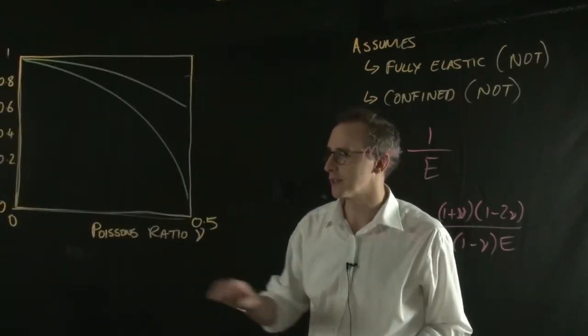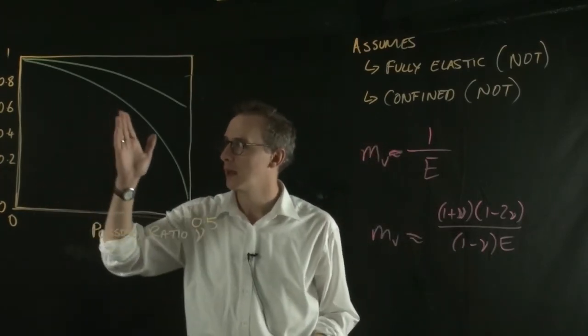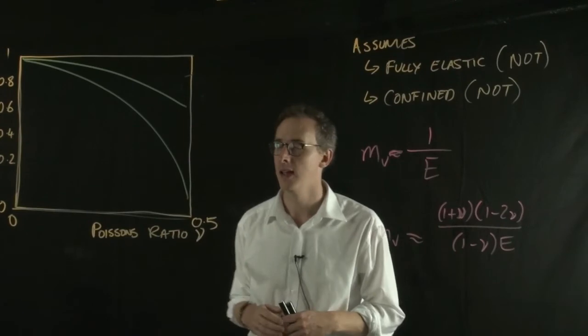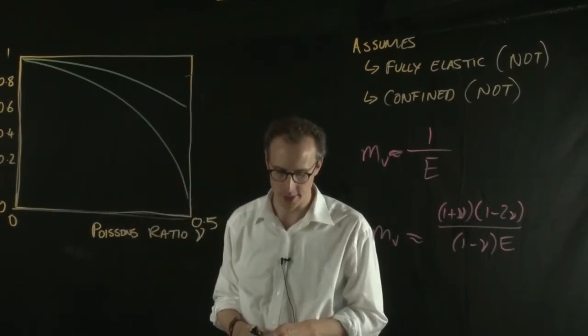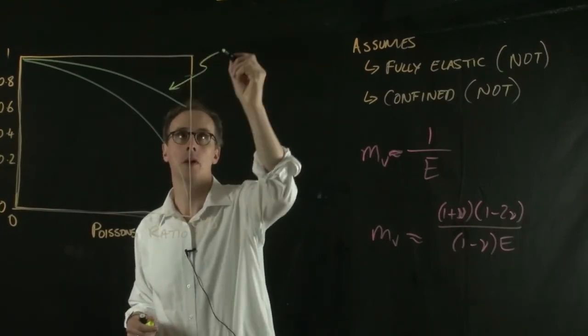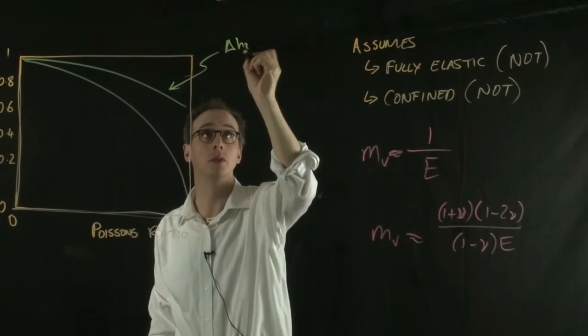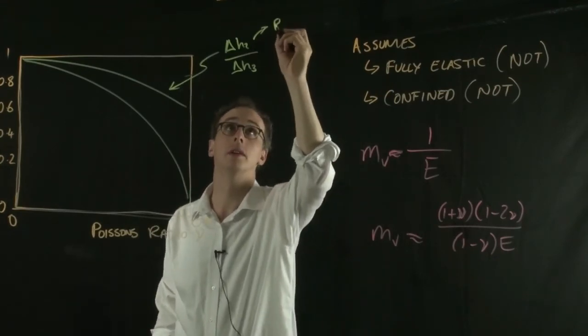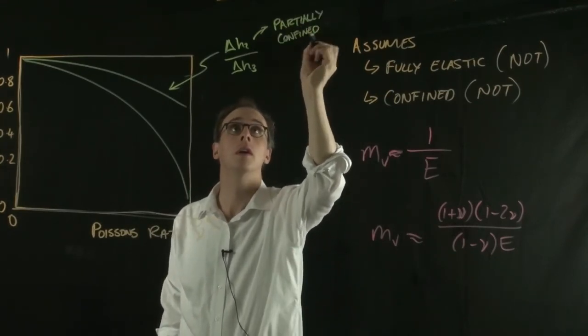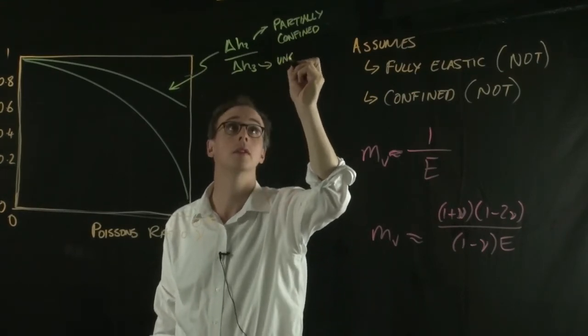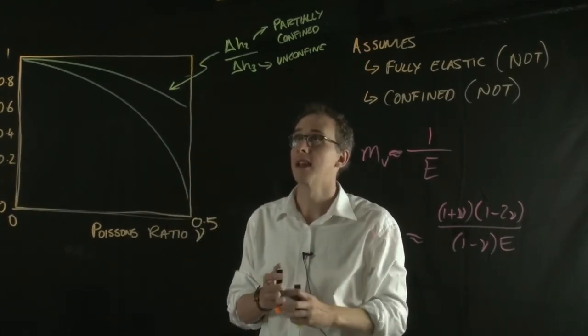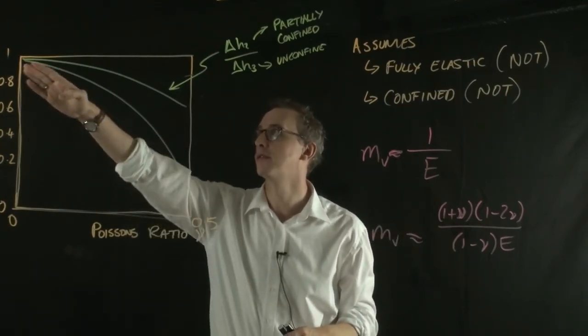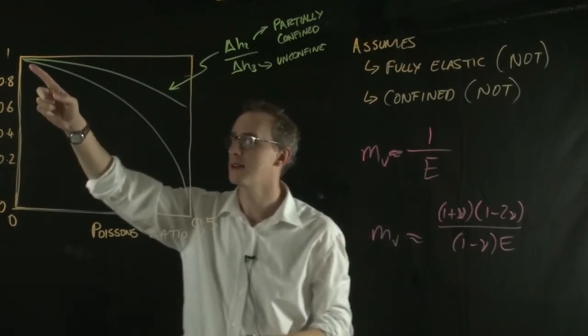If I draw a graph where I have Poisson's ratio on my x-axis and the y-axis is the difference between predicted settlements for confined and unconfined cases, we can draw a line like this, which is the ratio of delta H2 over delta H3. Delta H2 is our partially confined, and delta H3 is our unconfined. You can see that if the settlements were equal, this line wouldn't deviate from 1. But as we increase our Poisson's ratio, the unconfined settles more than the partially confined.